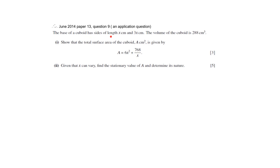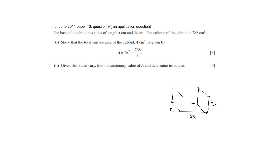The base of a cuboid has sides of length x centimetres and 3x centimetres, and the volume of the cuboid is given. In the first part you are being asked to show that the total surface area is given by a certain expression. The cuboid has length x, width 3x, and height h. The volume is length times width times height, so x times 3x times h. The volume is given as 288, so the first step is to represent h in terms of x, giving h equals 288 over 3x squared.